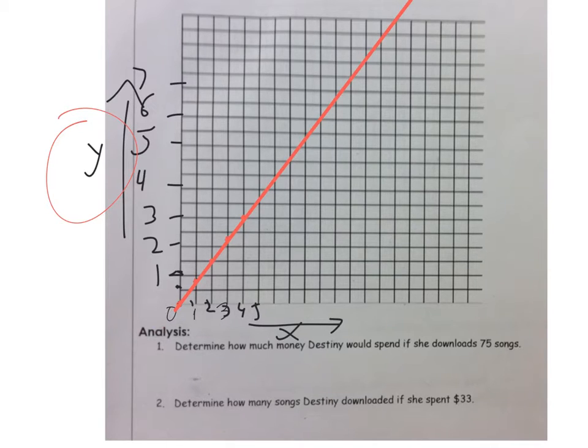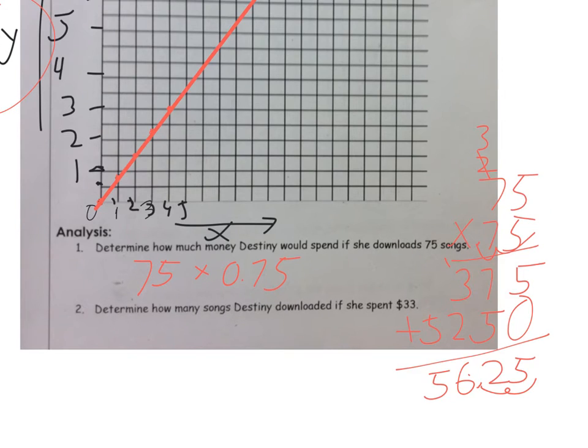So it says, determine how much money would Destiny spend if she downloads 75 songs? If you had your graph going up far enough, you could use that to kind of figure that out. But I ultimately would just do 75 times 0.75 like the equation says. So my answer to that would be $56.25. I did the work over here, and I checked it with a calculator. And that's what I got both times.